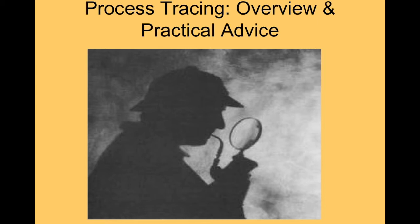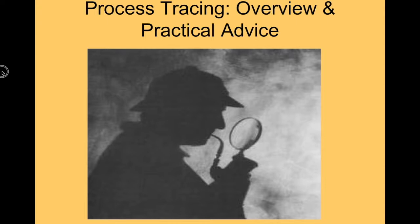I like to start off with this image of Sherlock Holmes because process tracing is a lot like detective work. We have suspects — alternative explanations of the outcome of the case — and we have evidence and clues. Clues can be things we know to look for because we have hypotheses, or things we stumble across that may fit an existing hypothesis or lead us to some new hypothesis or suspect we hadn't thought of before.